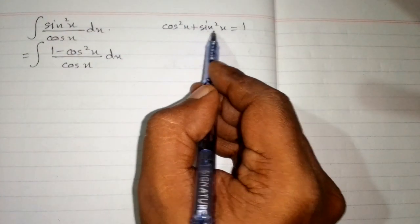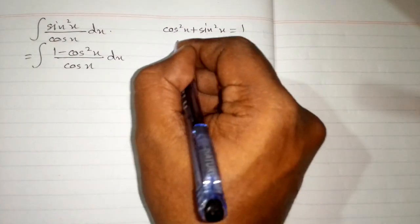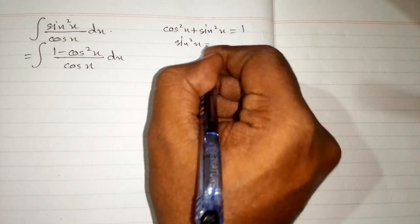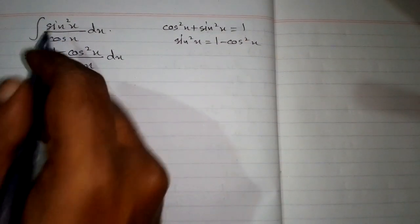So we can take cos²x to the other side, so sin²x equals 1 - cos²x. We can write 1 - cos²x in place of sin²x.